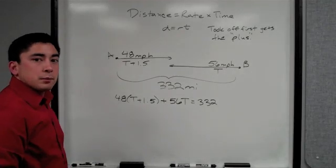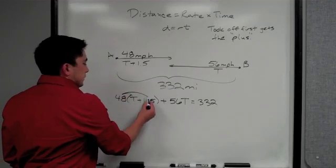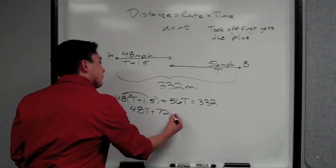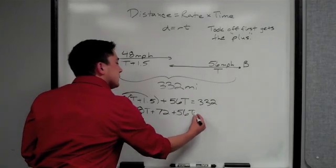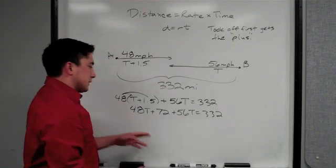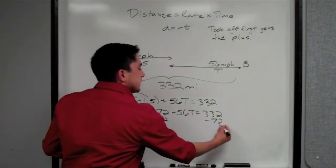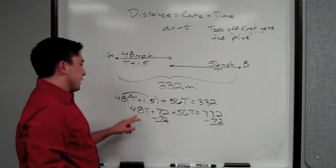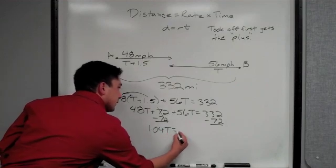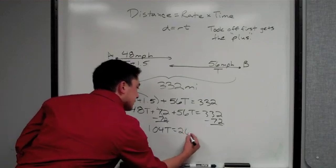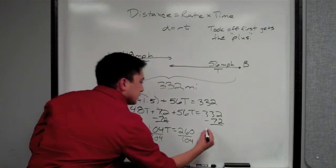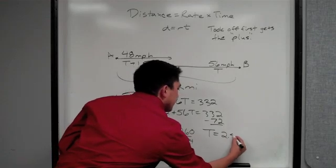We're going to do some simple math to get T by itself. We distribute: 48T plus 72 plus 56T equals 332. From there we get T by itself. We subtract 72. We have 48 plus 56, which gives me 104T equals 260. Lastly, we divide by 104. So T is equal to 2.5.